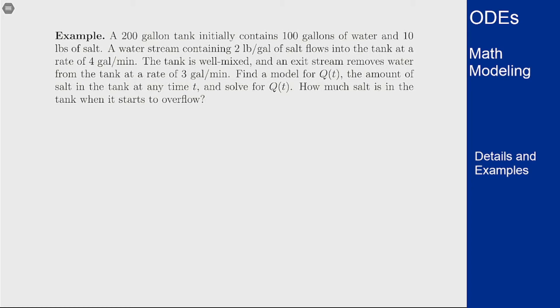A water stream flows in that contains 2 pounds per gallon of salt at a rate of 4 gallons per minute. The tank is well mixed and there's an exit stream that removes water from the well-mixed tank at 3 gallons per minute.